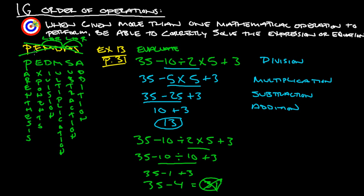PEMDAS will work if you treat it correctly: parentheses, exponents, and then do multiplication and division together left to right. Looking at the problem again — no parentheses, no exponents — doing division and multiplication left to right: negative 10 divided by 2 is negative 5, then negative 5 times 5 is negative 25. Then addition and subtraction left to right: 35 minus 25 is 10, plus 3 gives us 13. So as long as you go left to right with multiplication and division, and addition and subtraction, PEMDAS works.